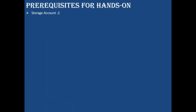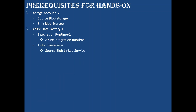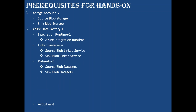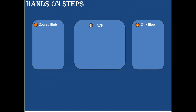Prerequisites: as you know from our previous sessions, we use two storage accounts - one for source blob, one for sink blob - then one Data Factory with Azure Integration Runtime, linked services, two datasets, one copy activity, and an ingestion pipeline. The steps involve creating three resources: source blob, sink blob, and ADF. Inside the source blob, I'll create a folder called 'cust' and upload two CSV files.